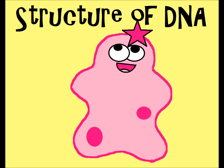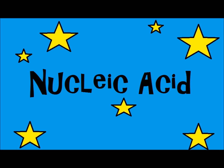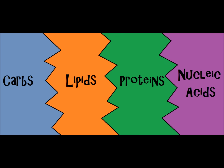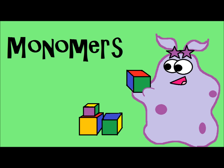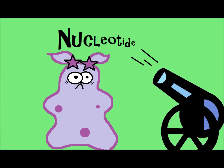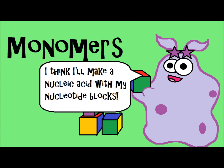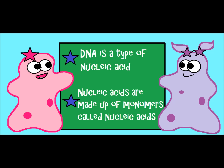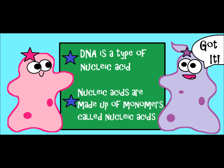Let's talk about the structure of DNA. First of all, DNA is a type of nucleic acid. If you remember the biomolecules, they included carbs, lipids, proteins, and nucleic acids — and DNA falls under nucleic acids. Like all biomolecules, there are building blocks called monomers. The building block of a nucleic acid is a nucleotide. It's really important to understand the parts of a nucleotide, because if you don't know what DNA is made of, you won't understand how it functions.